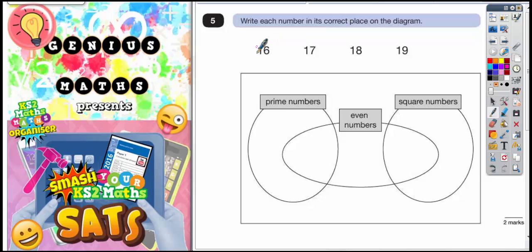So 16, hopefully you would recognize as a square number because 16 comes from a 4 by 4 square. Remember, if it's 4 by 4, you would actually have 16 little squares inside. So 16 is a square number, but it's also even.